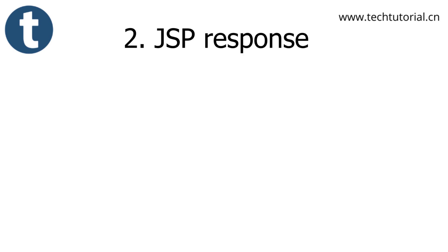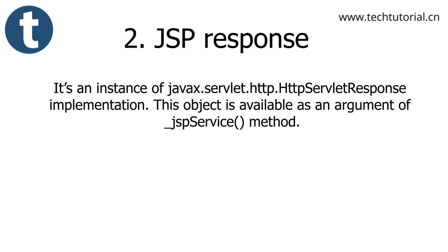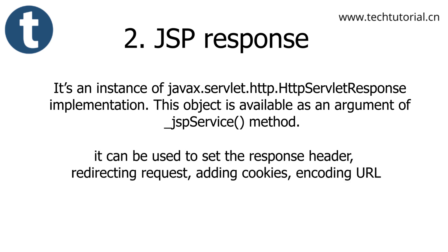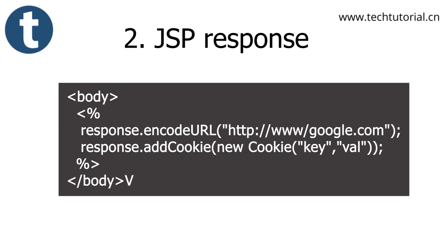The response object is also an implicit object — an instance of Java HttpServletResponse implementation. This object is also available as an argument of the JSP service method. The response object is used to set response headers, redirect requests, add cookies, and encode URLs. For example: response.encodeURL(siteName), and response.addCookie(new Cookie(key, value)).